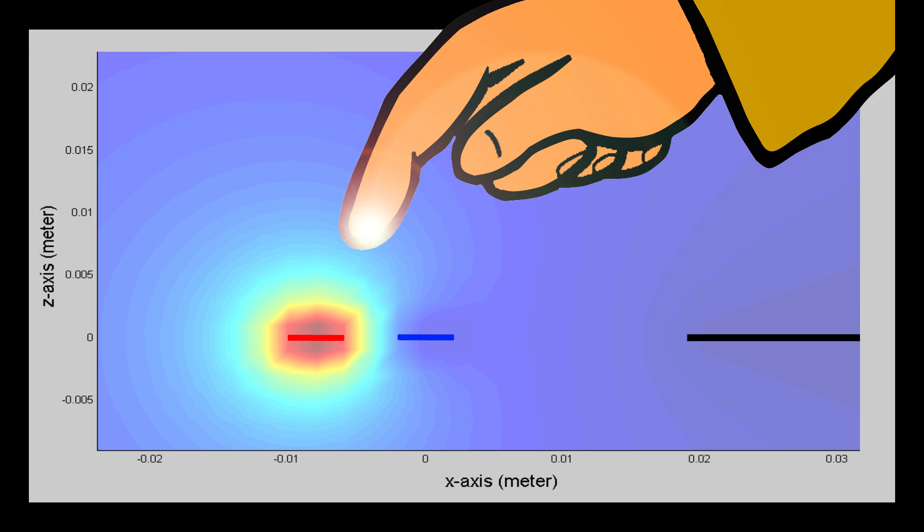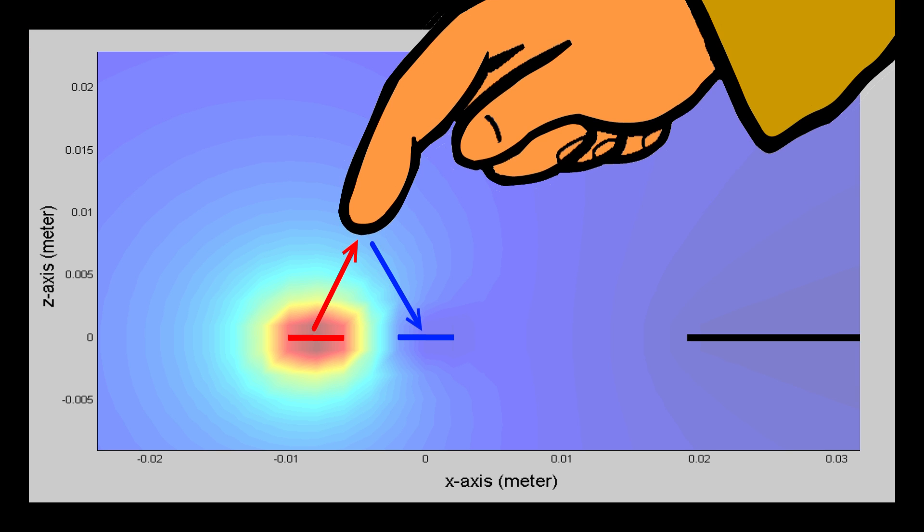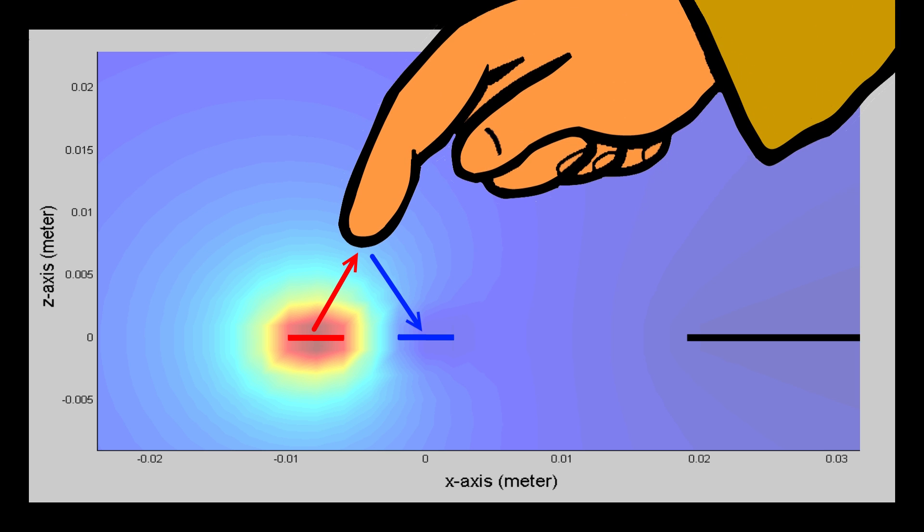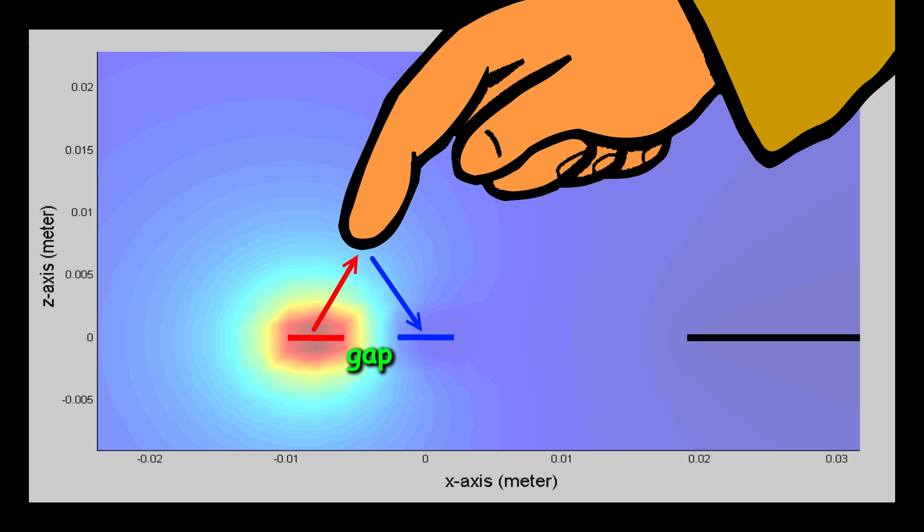To a certain extent, the fingertip acts like a reflector to reflect the E-field from the transmitter to the receiver. The signal picked up at the receiver is the touch signal. The best location to put the reflector is above the midpoint between the transmitter and the receiver, and therefore the gap appears to be the sensing area.